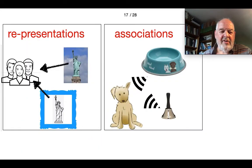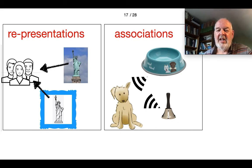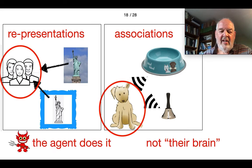Humans can use representations — images of things in the real world. Humans and indeed dogs can form associations. Pavlov's dog can learn to associate the sound of a bell with the expectation of food turning up. In all these cases, it's the agents that are doing the representing and forming the associations — not their brains or parts of their brain.